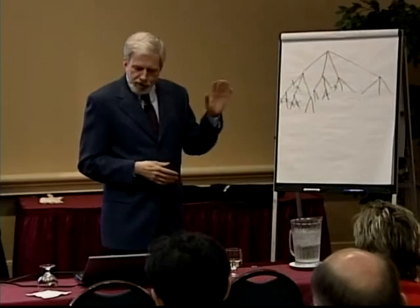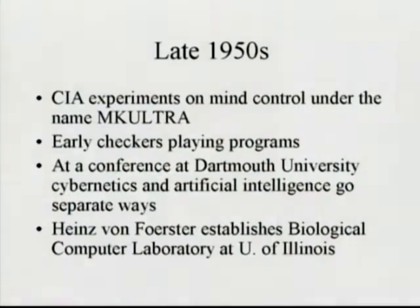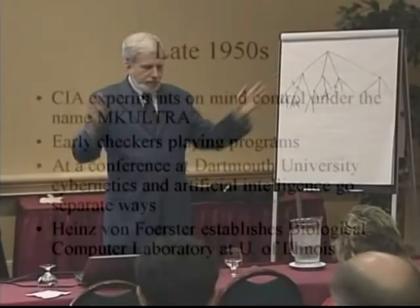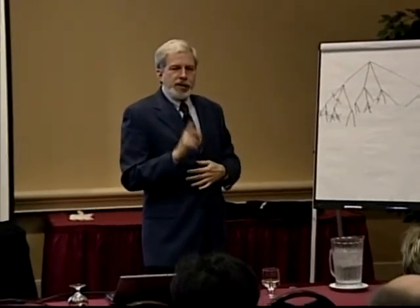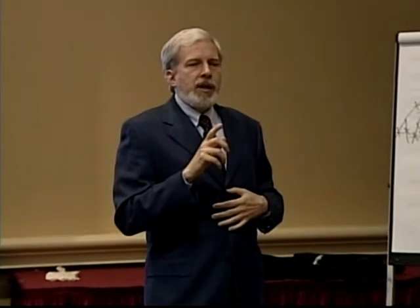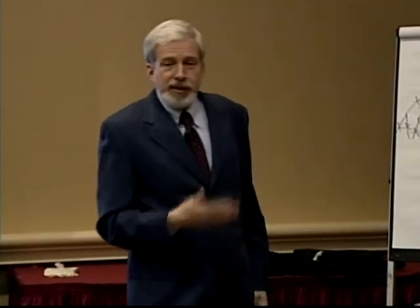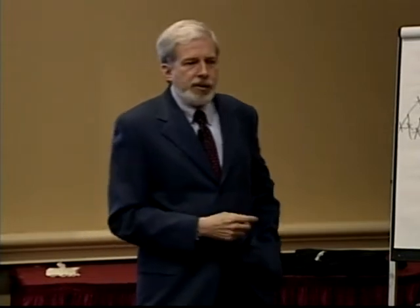At a conference at Dartmouth University in 1956, the cyberneticians and the artificial intelligence people parted company. This is sort of the history of cybernetics. And the issue that led to the split was how to create an artificial intelligence device. There were basically two strategies. One is you could tell the machine how to do the task.